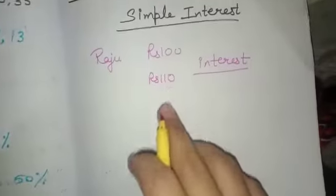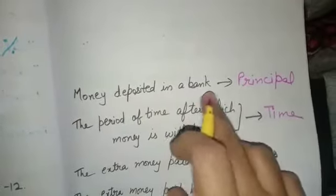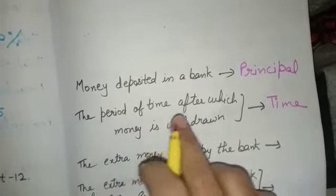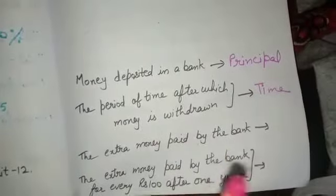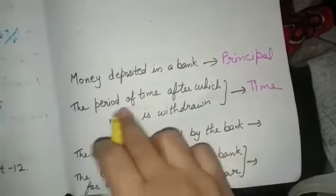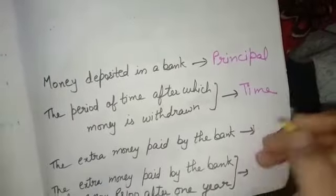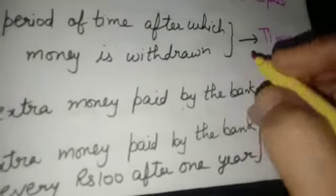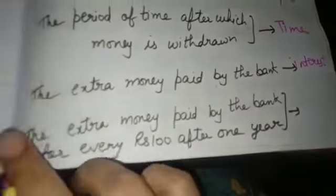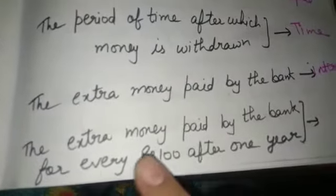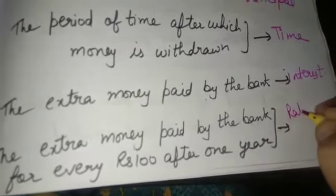Here we have come to know some new terms. Let's read about those. First, money deposited in a bank is called principal. The period of time after which money is withdrawn is called time. The extra money paid by the bank is called interest. And the extra money paid by the bank for every rupees 100 after one year is called rate of interest.